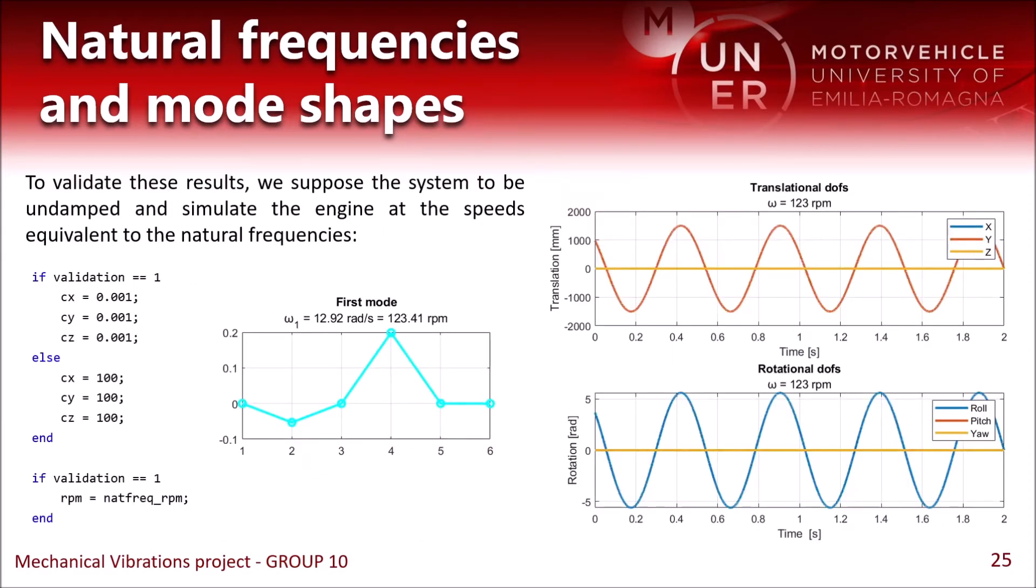To validate these results, we added a control variable. If it's set equal to 1, we simulate the system to be undamped, and we test the engine at constant speeds equal to the natural frequencies. Then we can compare the plots that we have just seen with the results of the system response, and see if the degrees of freedom that we expect to be in resonance are actually in resonance.